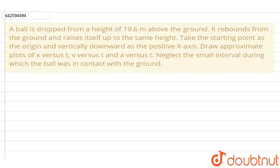In this question, a ball is dropped from a height of 19.6 meters above the ground. It rebounds from the ground and raises itself up to the same height. We have to take the starting point as the origin and vertically downward as the positive x-axis. Then we have to draw approximate values of displacement-time graph, velocity-time graph and acceleration-time graph. Also we have to neglect the small interval during which the ball was in contact with the ground.